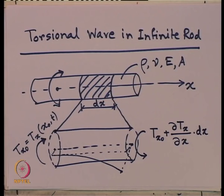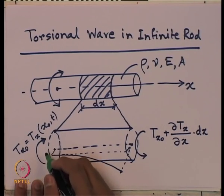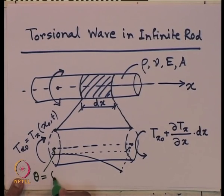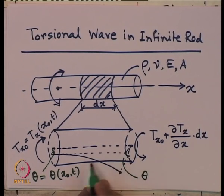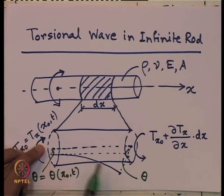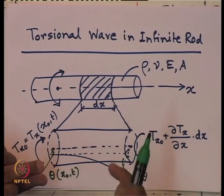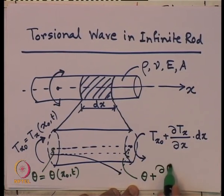The rotation or displacement at one end is θ(x₀, t), and at the other end it is θ + (∂θ/∂x)·dx, because there is a difference of torque at both ends. The central axis gets further twisted — compared to the first end, whatever got initially twisted, this end will be more twisted. Now let us see what further simplification we can do.